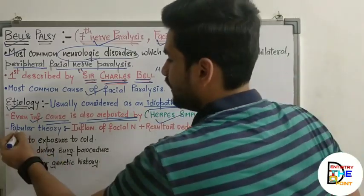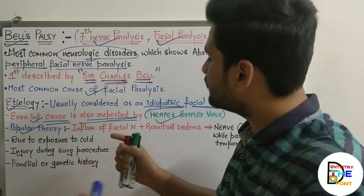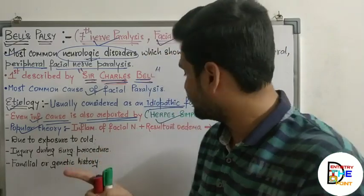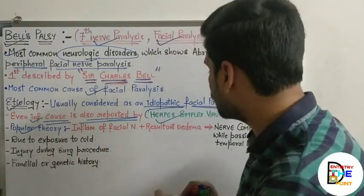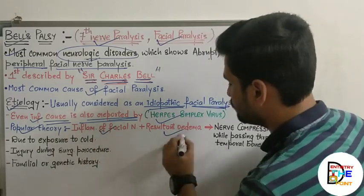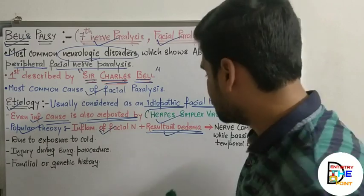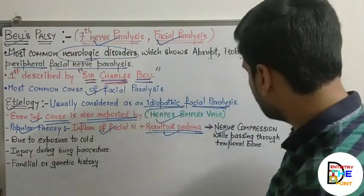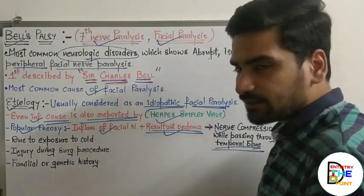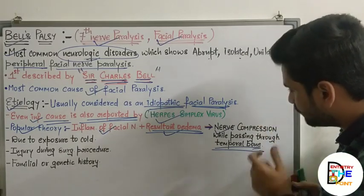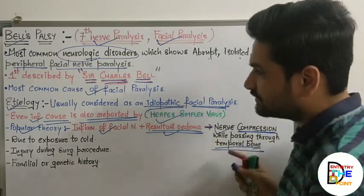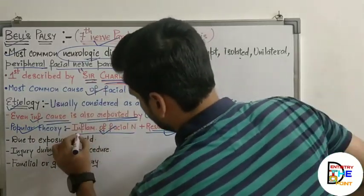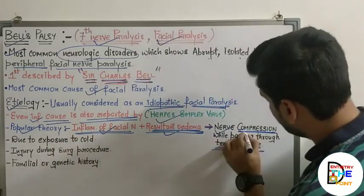A popular theory suggests that if there is any injury to the facial nerve due to any reason, there is inflammation in the facial nerve which results in edema of that region. Due to that edema, there will be compression of the facial nerve passing through the temporal bone, which will eventually lead to paralysis of those areas supplied by the facial nerve.